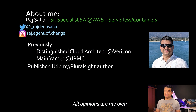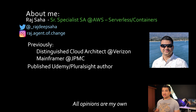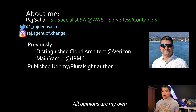For those of you who are new to this channel, my name is Raj. I'm a senior specialist architect for serverless and containers working at AWS. Before joining AWS, I was a distinguished cloud architect at Verizon, and before that I used to work in mainframe at JPMorgan Chase. I'm also a published Udemy and Pluralsight author with multiple courses on Kubernetes, serverless, infrastructure as code, etc.